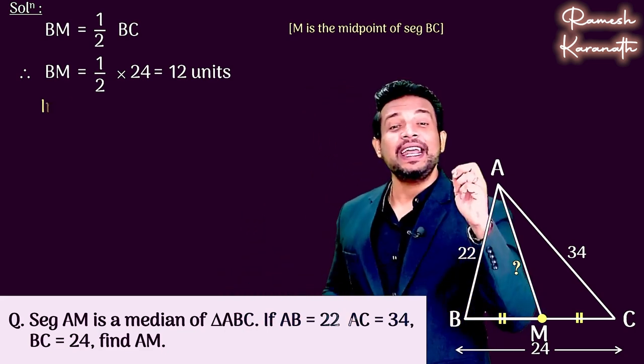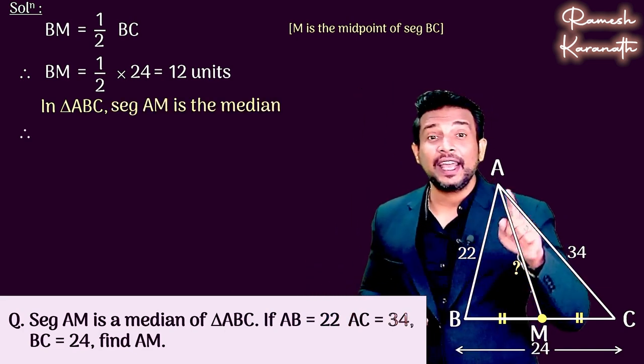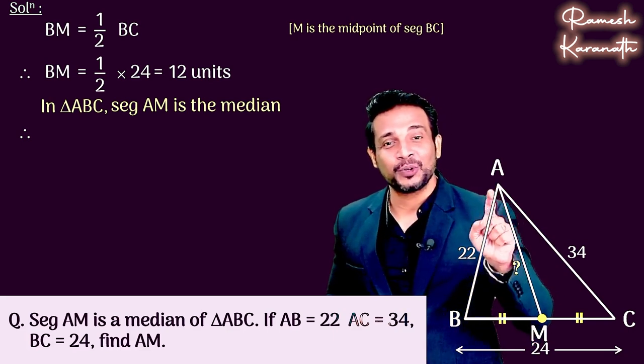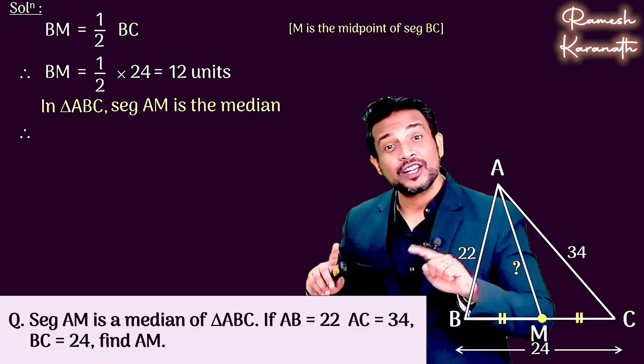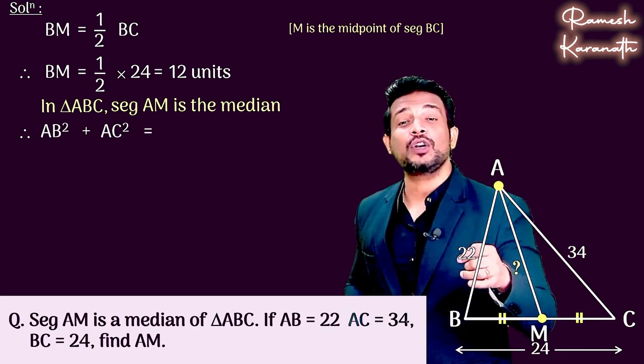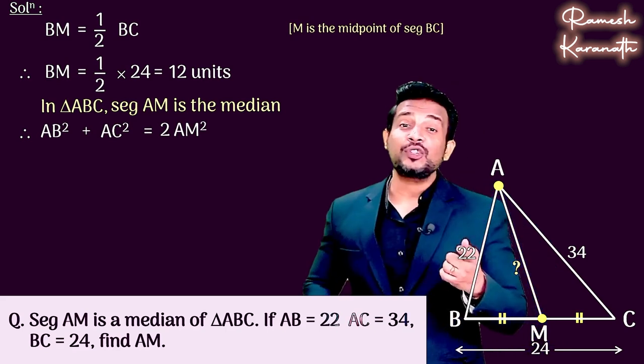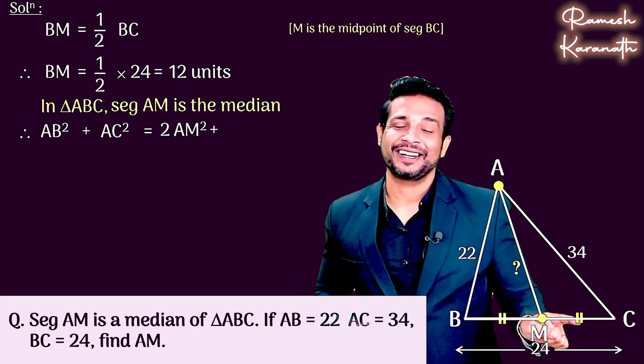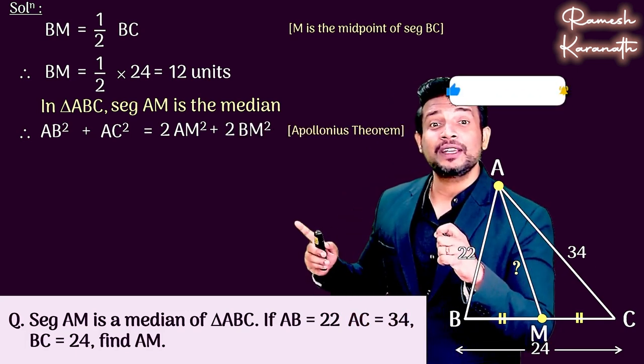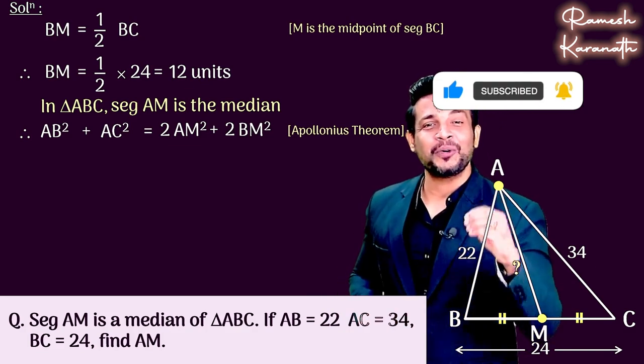In triangle ABC, AM is the median, so we will write the two sides that originate. On the left side we write AB square plus AC square is equal to right side twice of median square, twice of AM square plus twice of equal side square, that is BM square. This is Apollonius theorem. Remember the spelling: A-P-O-L-L-O-N-I-U-S.